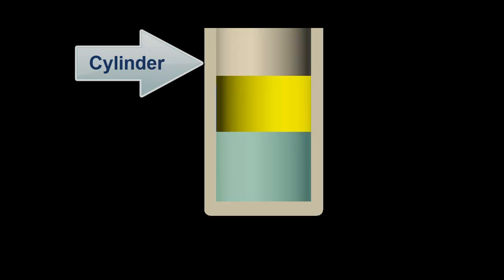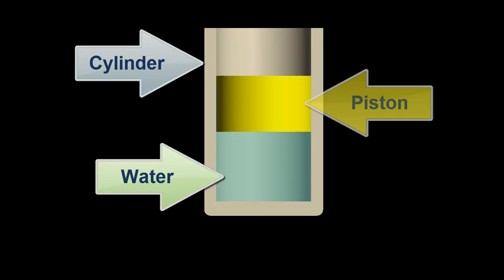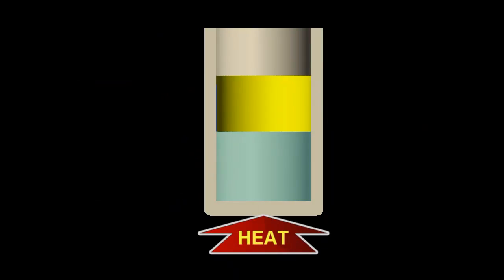In this animation, this part represents a cylinder, and it is partially filled with water. This represents a piston, tightly fitted to the cylinder so that there are no leaks in the system. As we add heat to the cylinder, the temperature of the water will increase and at some point will begin to boil. During the boiling process, the water changes phase from a liquid to a gas, otherwise known as steam.